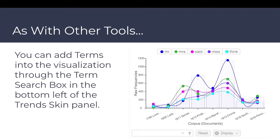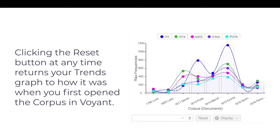As with other tools, you can add terms into the visualization through the term search box at the bottom left of the Trends skin panel. Clicking the reset button at any time returns your trends graph to how it was when you first opened the corpus in Voyant.